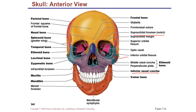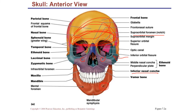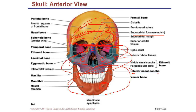Cranial nerve five passes through the superior orbital fissure, and another branch passes through the inferior orbital fissure, and another through the inferior orbital foramen, and yet another through the mental foramen. Cranial nerve five has three branches — V1, V2, and V3 — supplying three regions of the face. The trigeminal nerve (cranial nerve five) provides sensory to the face and is also motor to the muscles of mastication.